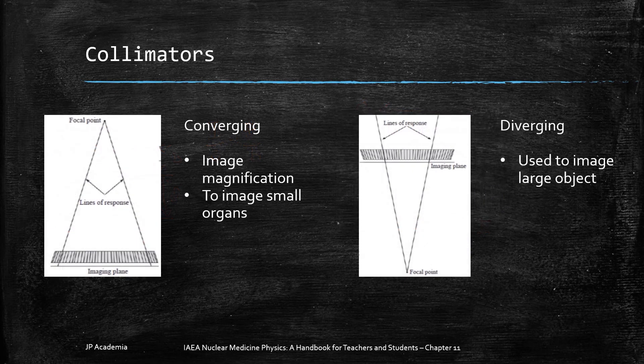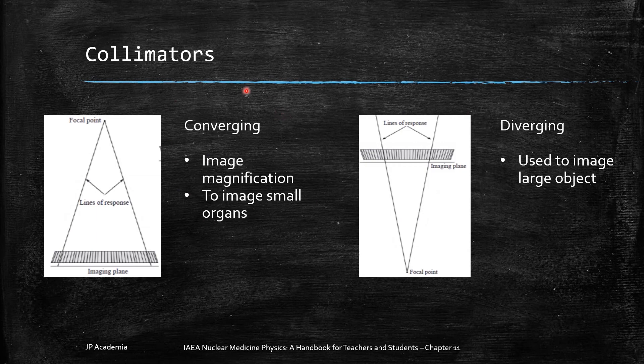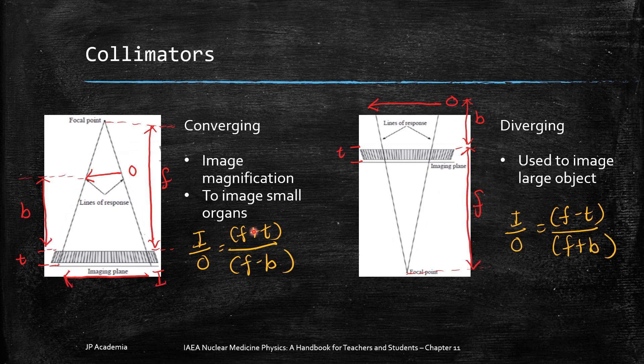Third type of collimator is converging collimator. Converging collimator is used for image magnification. This is used to image small organs. The ratio of the image size with respect to the object is equal to this expression.